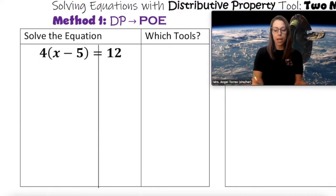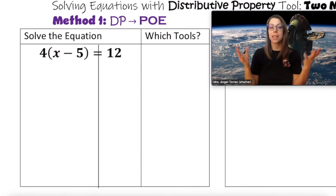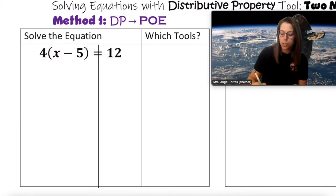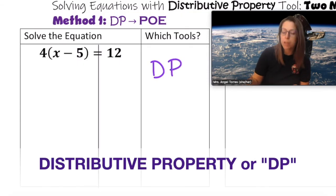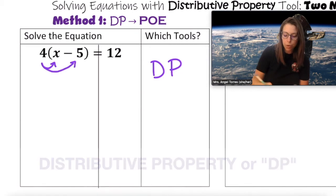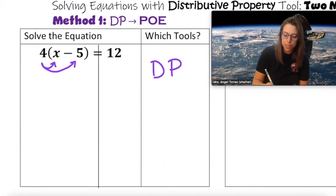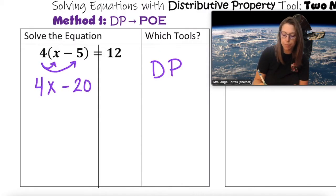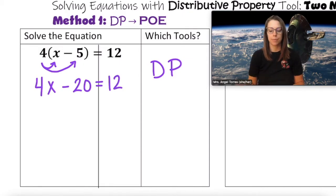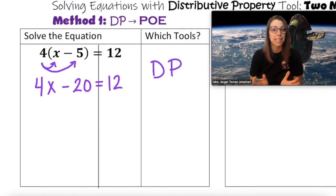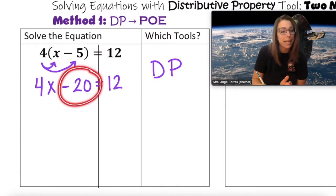Now, I notice here that my constant, minus 5, is trapped inside of a group. So before I can do anything, I need that constant to be broken free. To do that, one of the tools I can use is called the distributive property, or DP for short. I would multiply everything inside the group by what's outside of the group, 4. So 4 times x is 4x, and 4 times a minus 5 is a minus 20, and equals 12 is not affected. Now essentially, I have a basic two-step equation, and my constant is free, though it has become a minus 20 whereas before it was a minus 5.